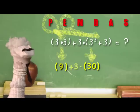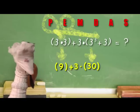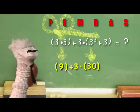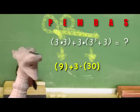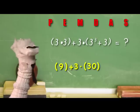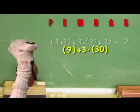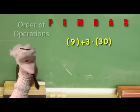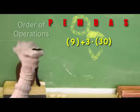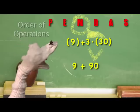Now we have 9 plus 3 times 30. Now, since we are using the order of operations, multiplication comes first. 30 times 3 equals 90.